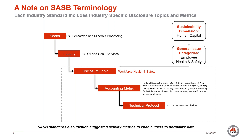If we take one industry, such as oil and gas services, which is an industry under the extractives and minerals processing sector, the disclosure topic is tailored specifically to oil and gas services, which is workforce health and safety. The accounting metric for this specific disclosure topic is total recordable injury rate, fatality rate, near miss frequency rate, total vehicle incident rate, and average hours of health, safety, and emergency response training for full-time employees, contract employees, and short service employees. Each accounting metric is supported by a technical protocol, which provides specific and detailed guidance on how to report the accounting metric.